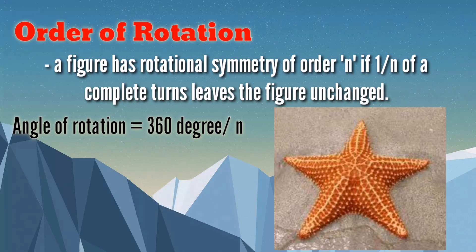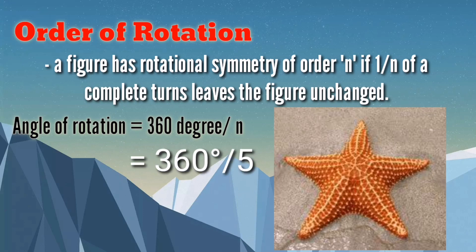The same goes with the starfish. If we are going to get the angle of rotation, we simply divide 360 over 5 as the number of folds, so we get 72 degrees as the angle of rotation of the starfish.